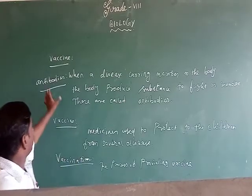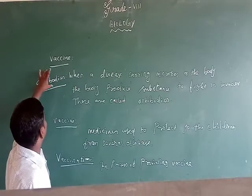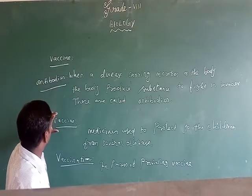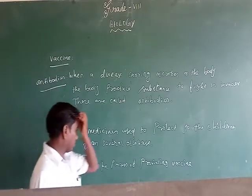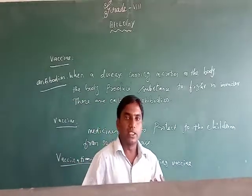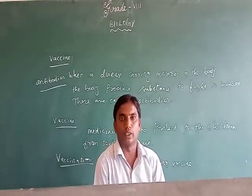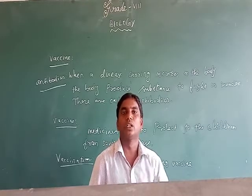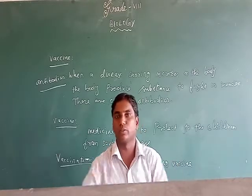In this topic you have learnt about the meaning of antibodies and the meaning of vaccine. One important word is immunity. There are two kinds of immunity: natural immunity and acquired immunity.